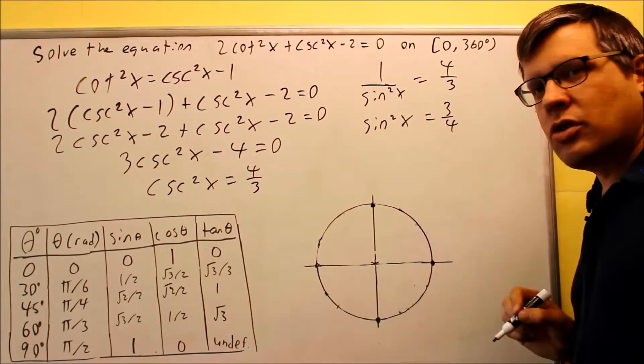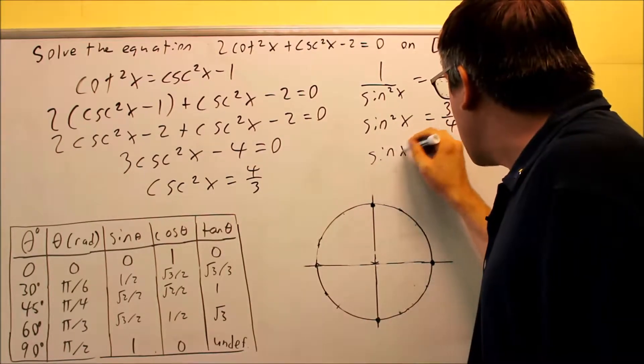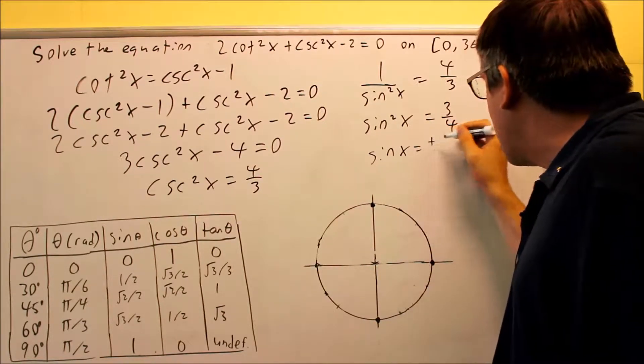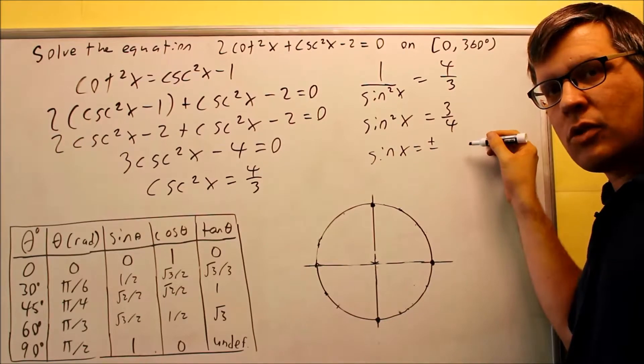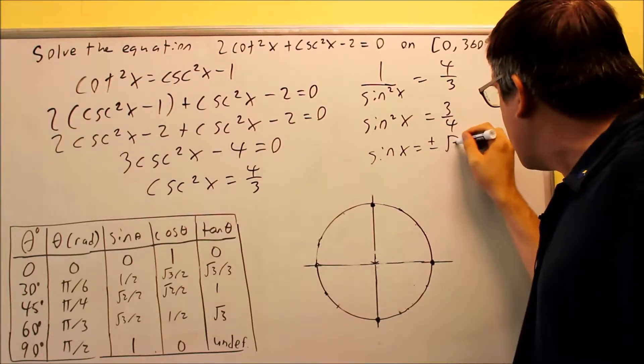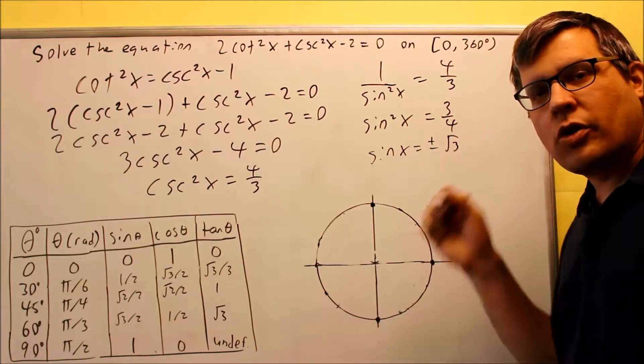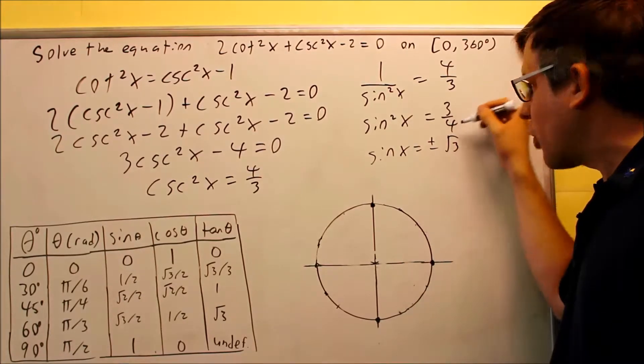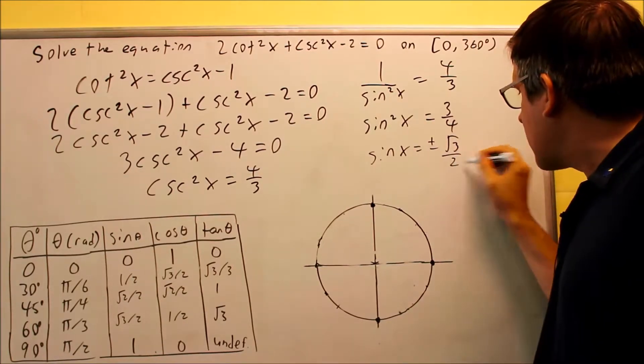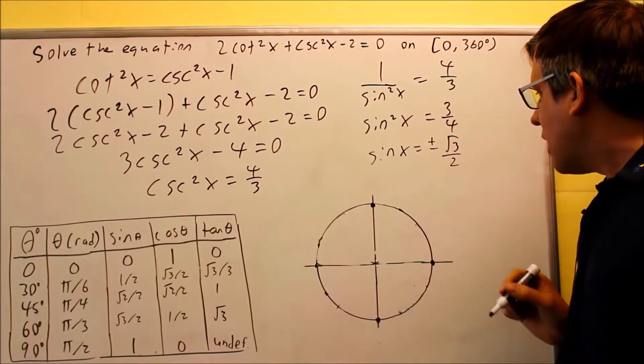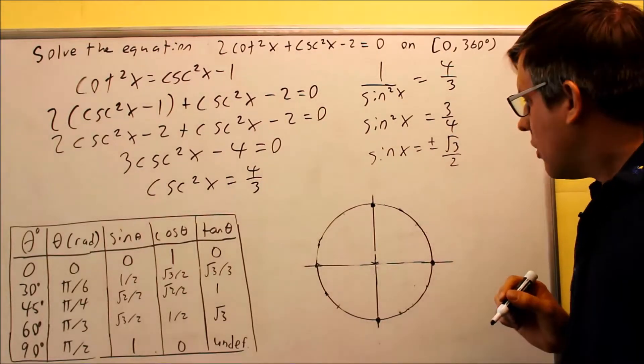Sine squared equals 3 fourths and I square root both sides so sine x equals plus or minus. When I take the square root of the top and bottom, square root of 3 I'm not going to be able to do but I could also do the square root of the bottom one. Square root of the top and square root of the bottom separately, that's going to give me plus or minus square root of 3 over 2.